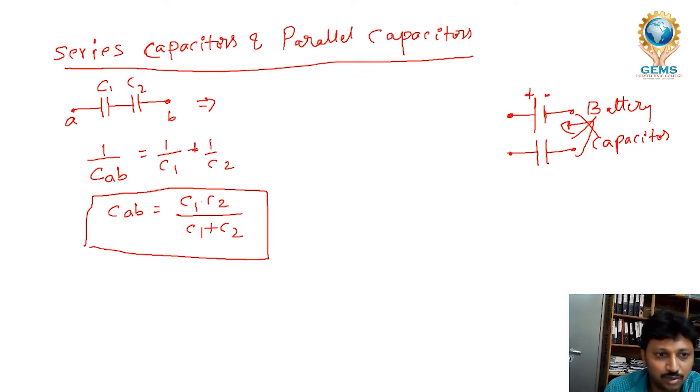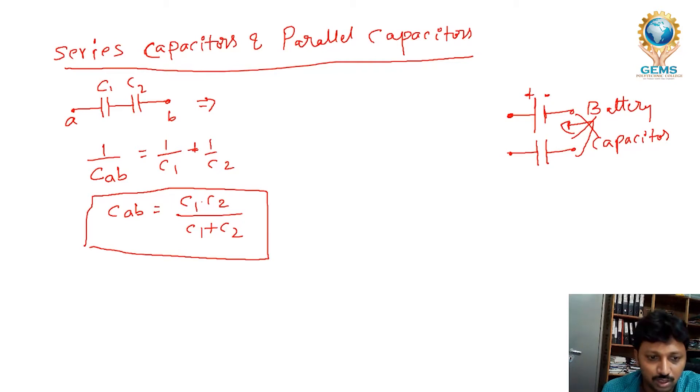So CAB is equal to C1 into C2 divided by C1 plus C2. If you have three capacitors, you can do the same thing.